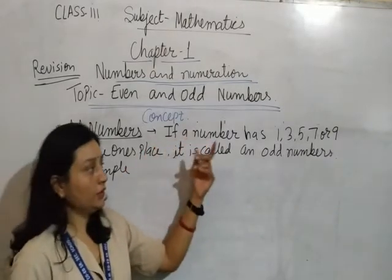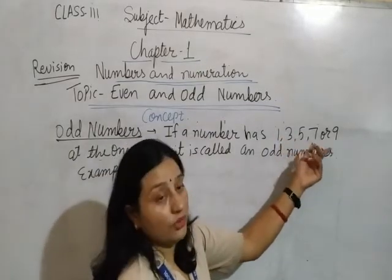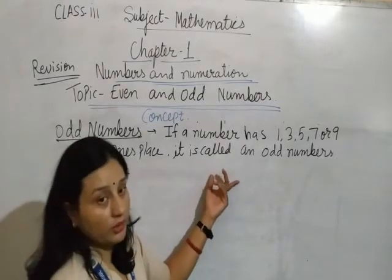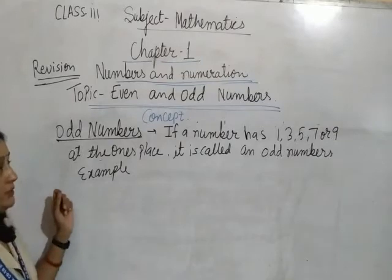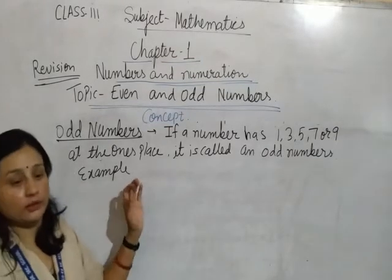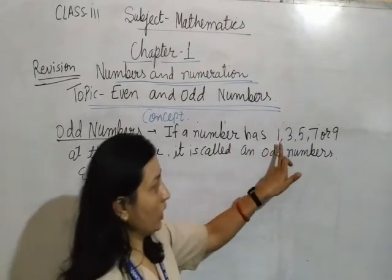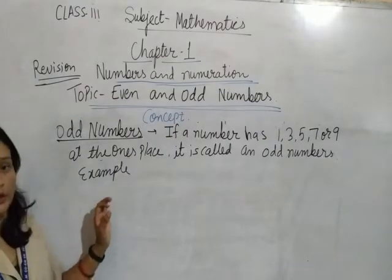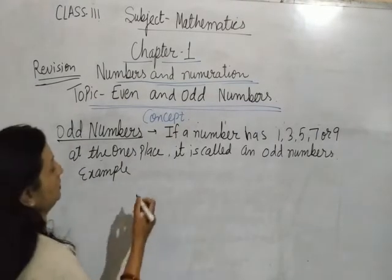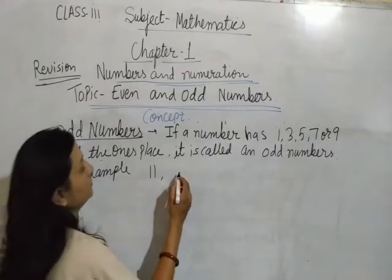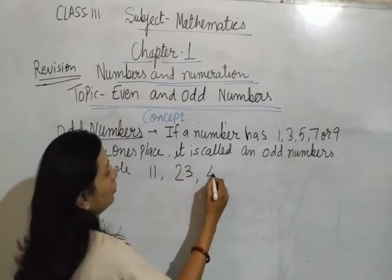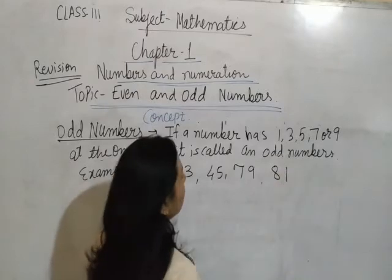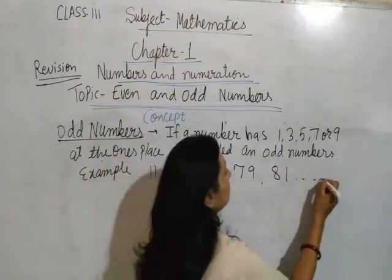If a number has 1, 3, 5, 7, or 9 at the ones place, it is called an odd number. It means, for any number given, you check the ones value. If the ones value is 1, 3, 5, 7, or 9, that number is called an odd number. Some examples: 11, 23, 45, 79, 81, and more.